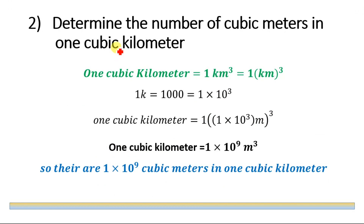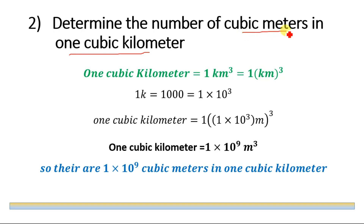Numerical number two: determine the number of cubic meters in 1 cubic kilometer. We will convert 1 cubic kilometer to cubic meters. We know that 1 cubic kilometer is equal to 1 kilometer whole cube. Keep in mind that this cube applies not only to 'meter' but also to 'kilo' — so this is (1 km)³.